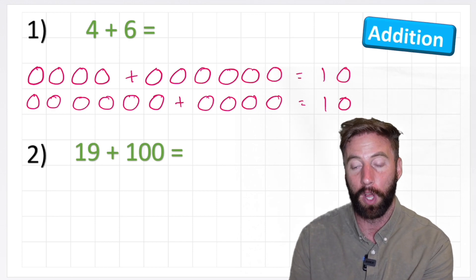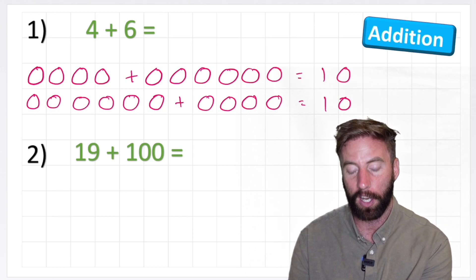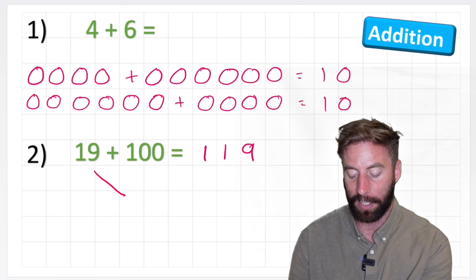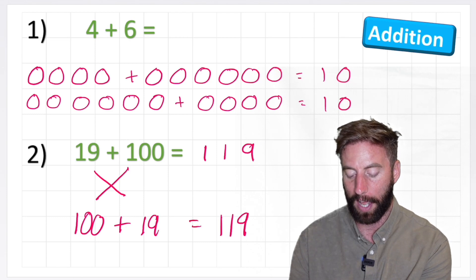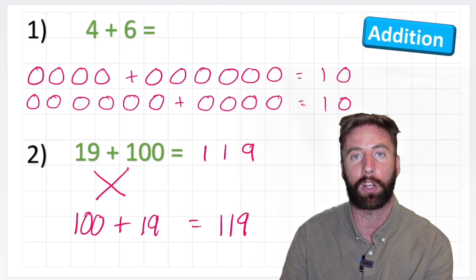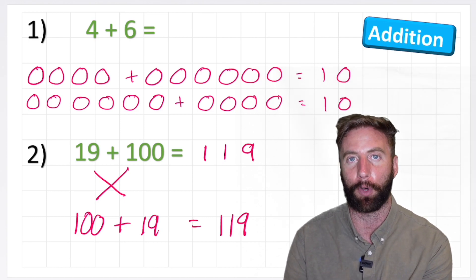Let's look at this second example. 19 + 100 equals 119. But if I flip my addends the other way, and have 100 at the start, and plus it to 19, I still get 119. And if I was a patient person and could draw out all those circles and balls, I could prove it with that model as well.